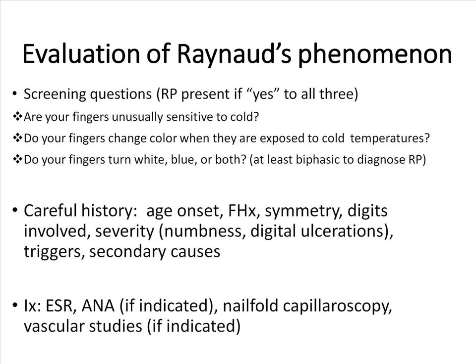To evaluate Raynaud's phenomenon, three screening questions may be asked, and Raynaud's phenomenon may be determined to be present if all three responses are yes. Then do a careful history including age of onset, family history, symmetry of involvement, digits involved, and severity — for example, whether it is complicated by digital ulceration or numbness, which is more likely to suggest a secondary cause. Note different triggers and secondary causes. Further investigations include ESR, anti-nuclear antibody if indicated, and nail-fold capillaroscopy. Vascular studies are done only as indicated — for example, if there is a blood pressure difference between the arms or absence of pulses.